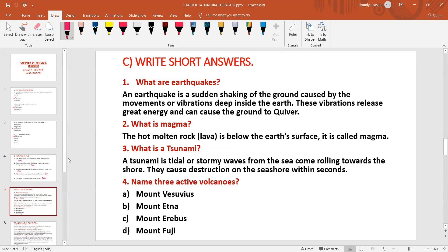Name three active volcanoes. So I give you four, you can remember any three. Mount Vesuvius, Mount Etna, Mount Erebus and Mount Fuji. So you can remember any three of these.